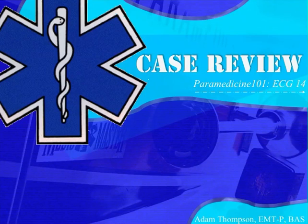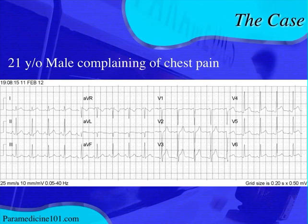Hello, this is ECG case number 14. Should be a pretty quick and easy case to go over. It's a 21-year-old male that's complaining of chest pain. That doesn't give you a whole lot of information — you don't have anything about the rest of their presentation or their medical history. But let's just take a look at it based on the ECG alone.